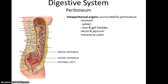The peritoneum is a serous membrane found in the abdominal cavity. Some organs that are intraperitoneal — surrounded by the peritoneum — include the stomach, the spleen, the liver and gallbladder, the ileum and jejunum of the small intestine, and the transverse colon of the large intestine.